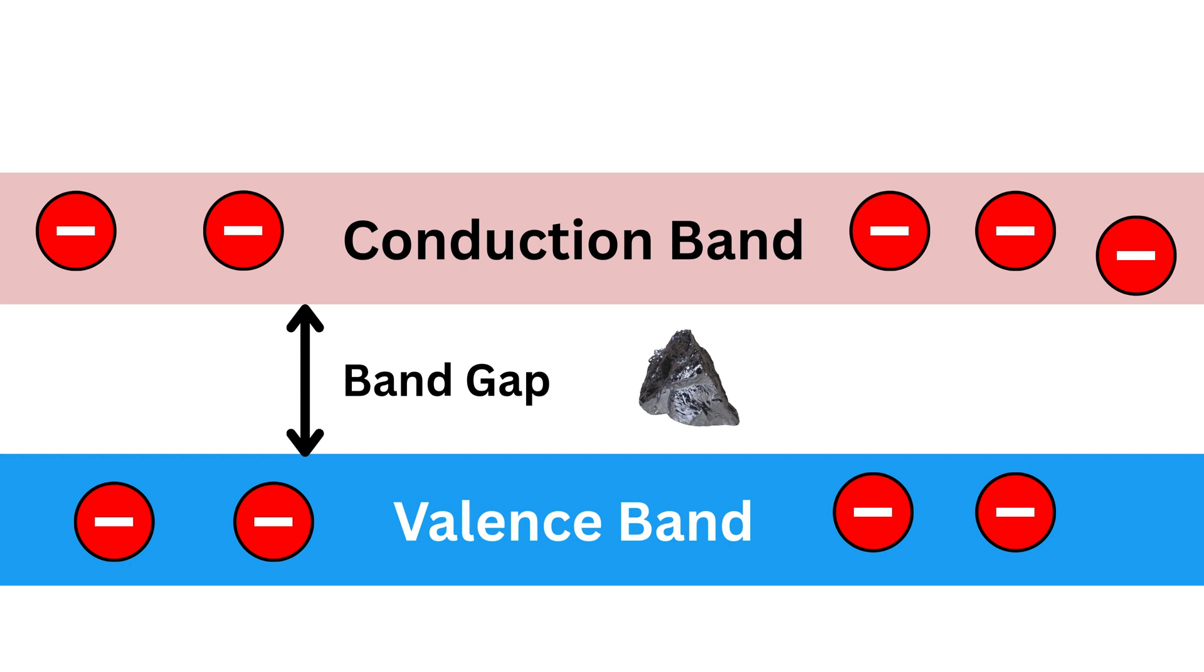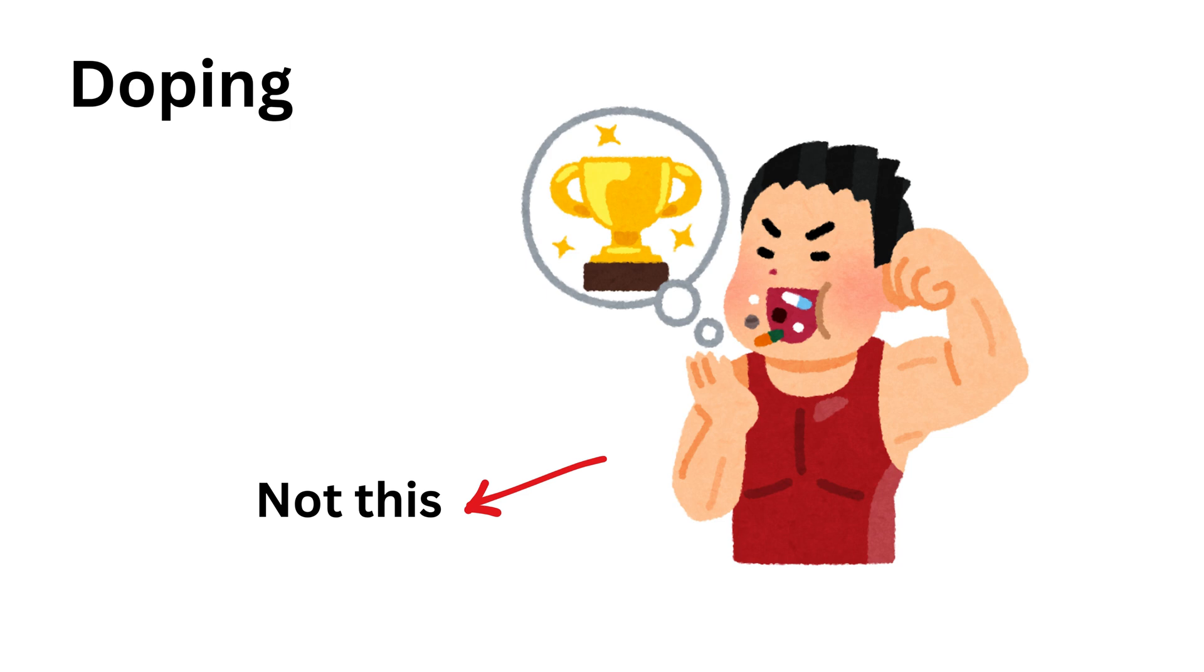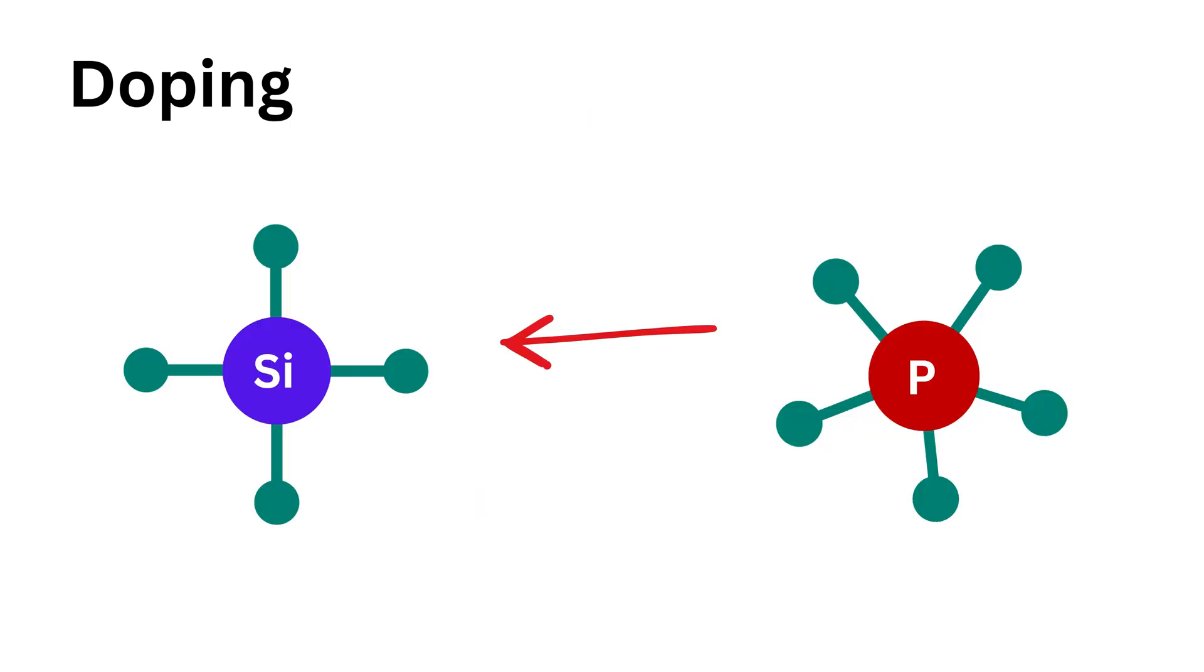And make silicon useful in electronic devices. For that, here comes the brilliant trick called doping. Doping means adding a small amount of another material, called an impurity, to the silicon in order to improve its conductivity.